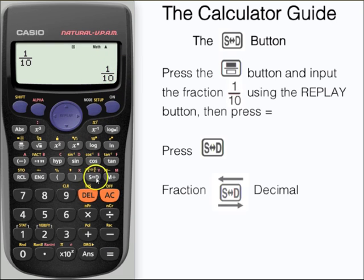Then use the S⇔D button to change between 1/10 and 0.1. We can then press it again to change back.